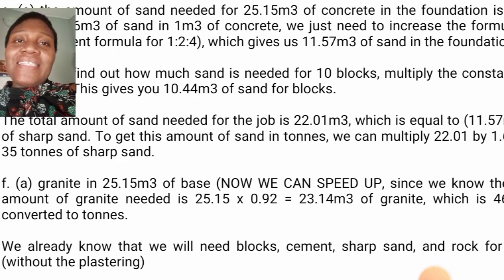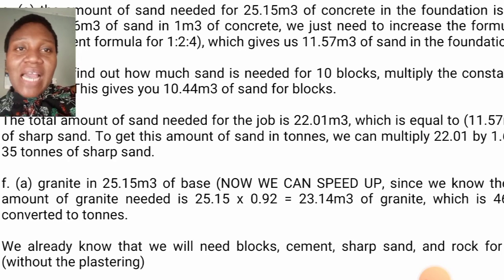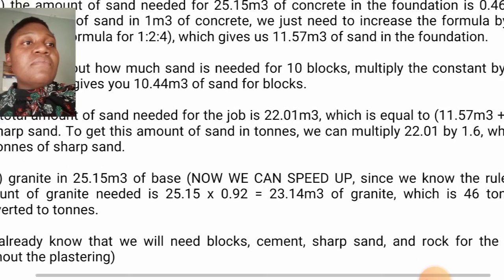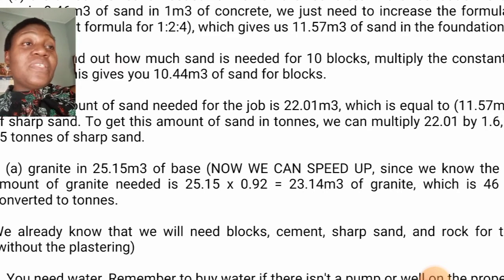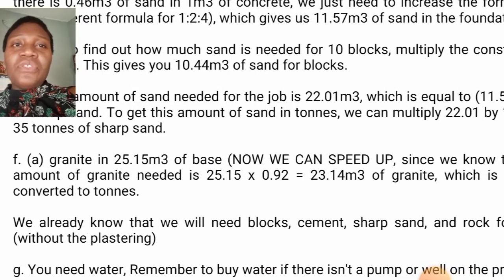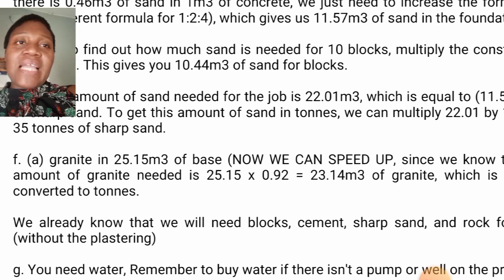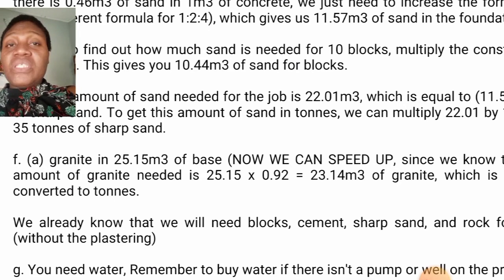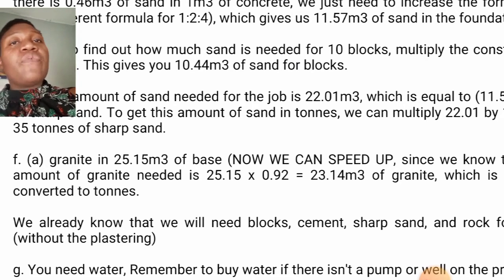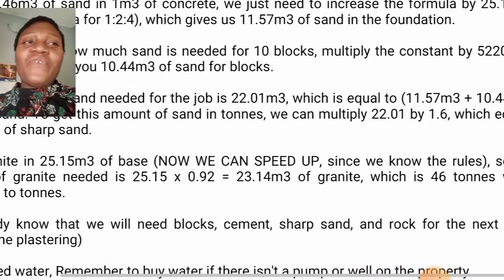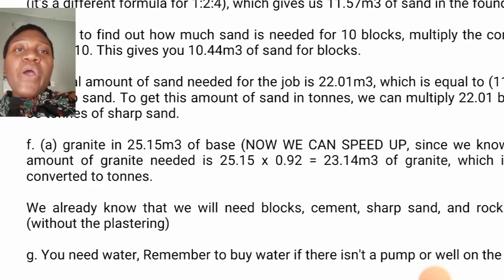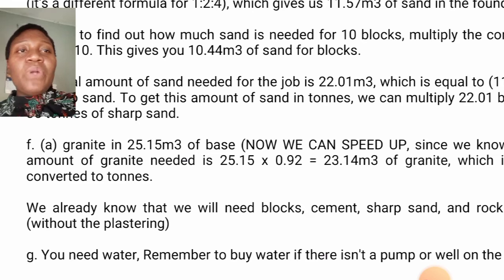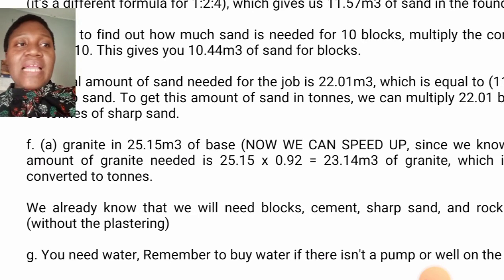Now for granite: the amount of granite needed is 25.15 cubic meters multiplied by 0.92, which gives 23.14 cubic meters of granite — equivalent to approximately 46 tons. So we now know we will need blocks, cement, sharp sand, and granite for the job.